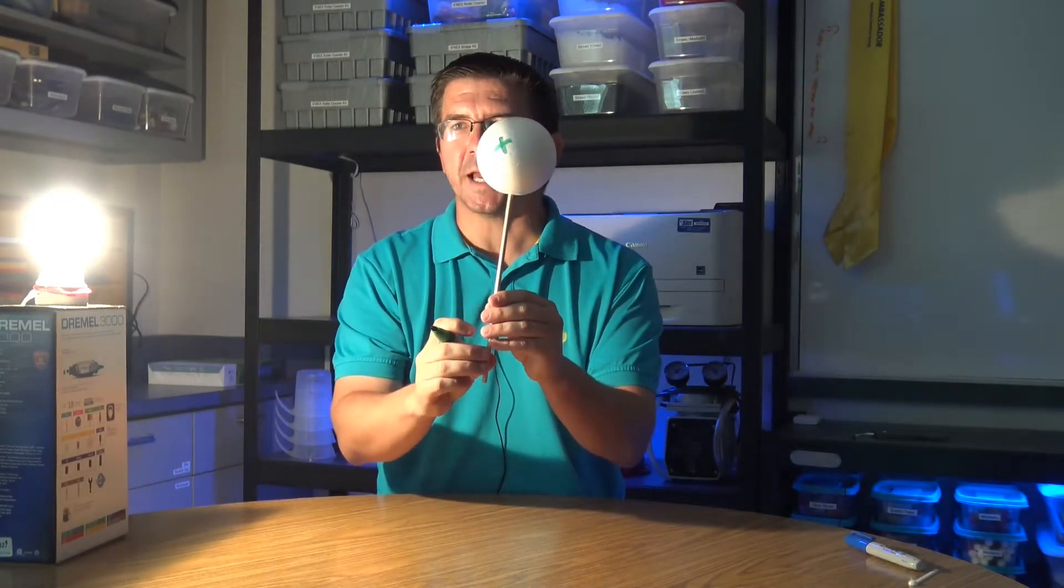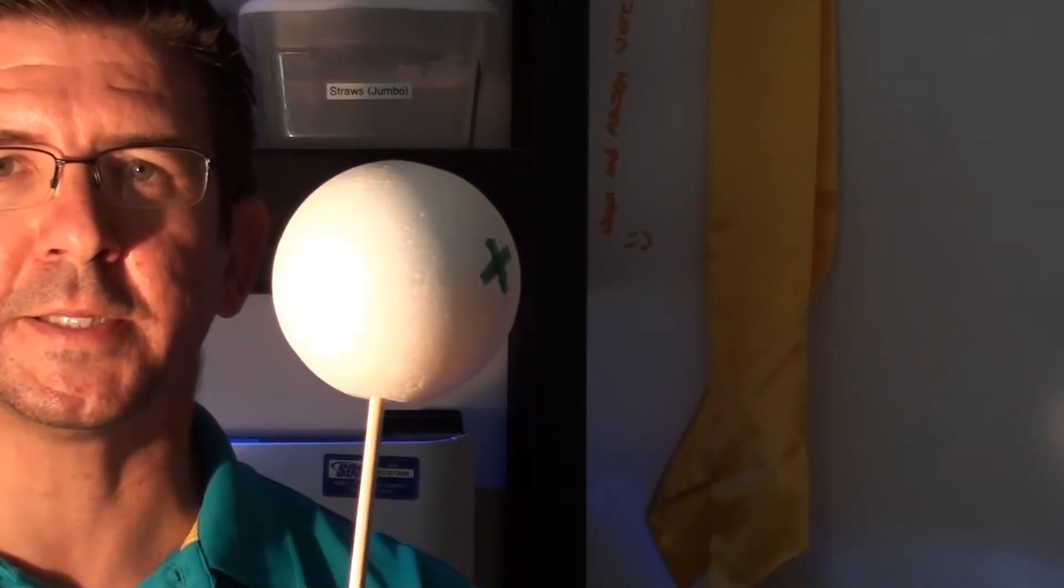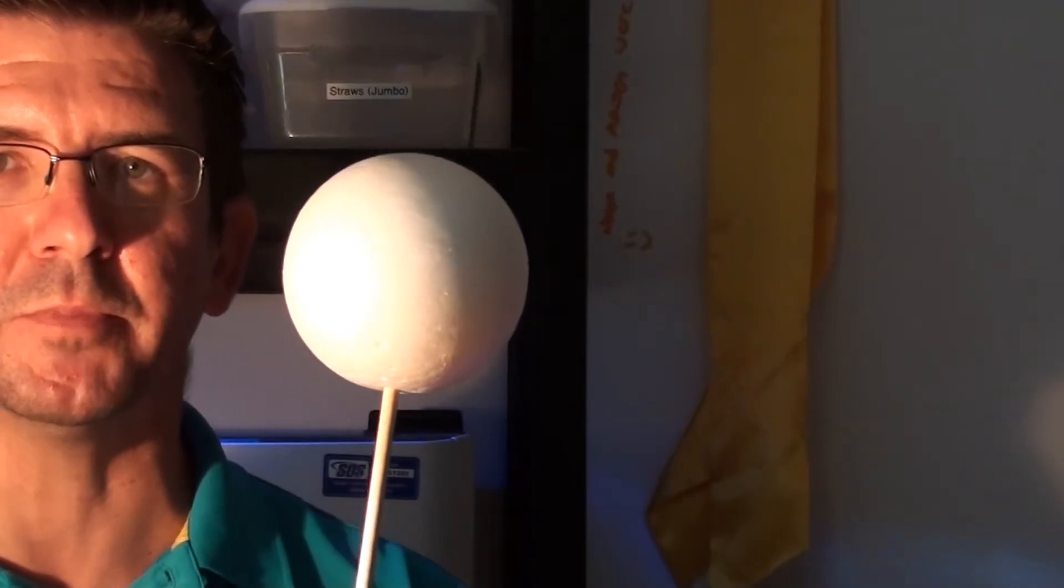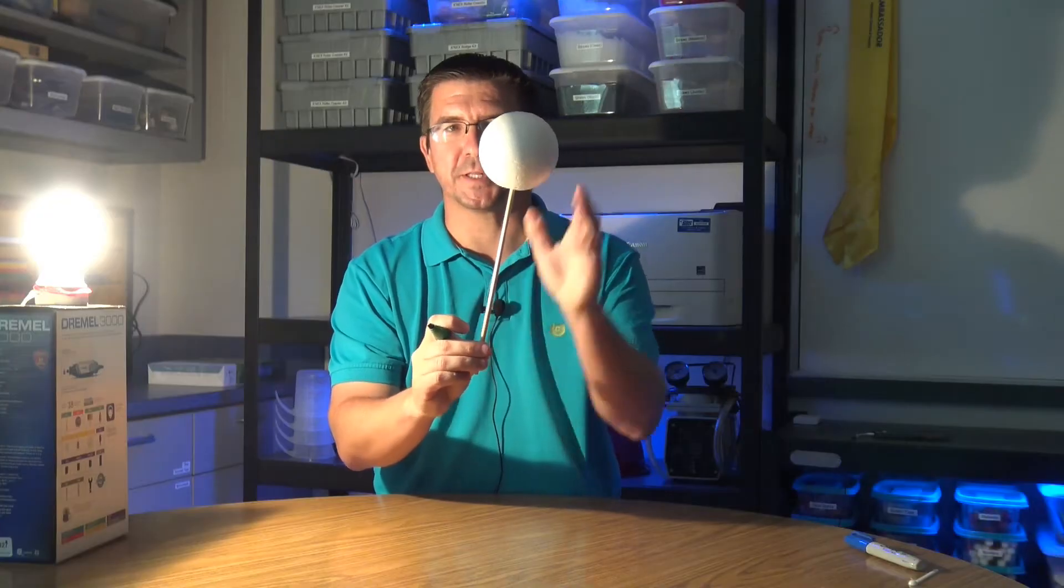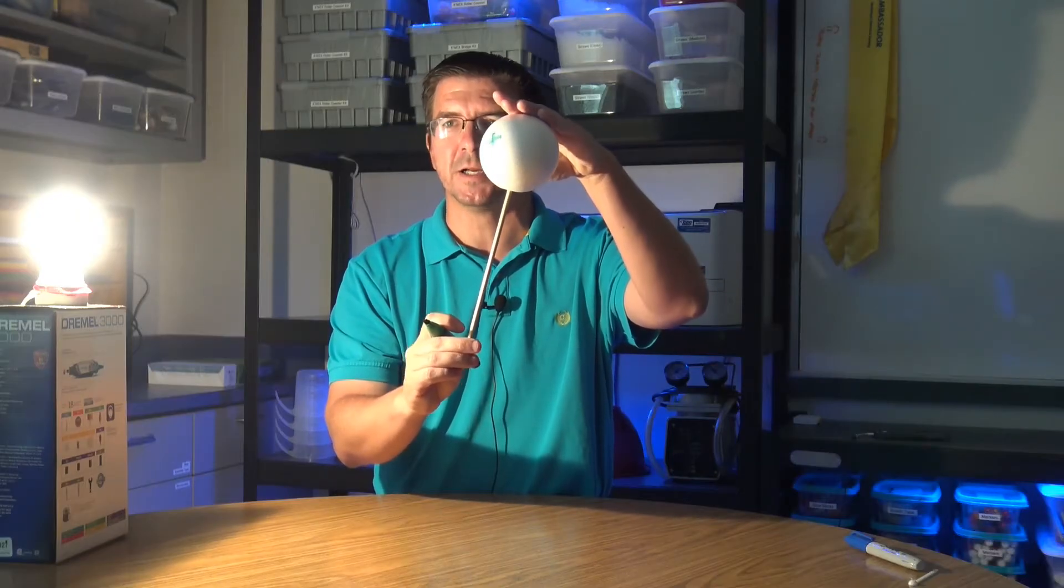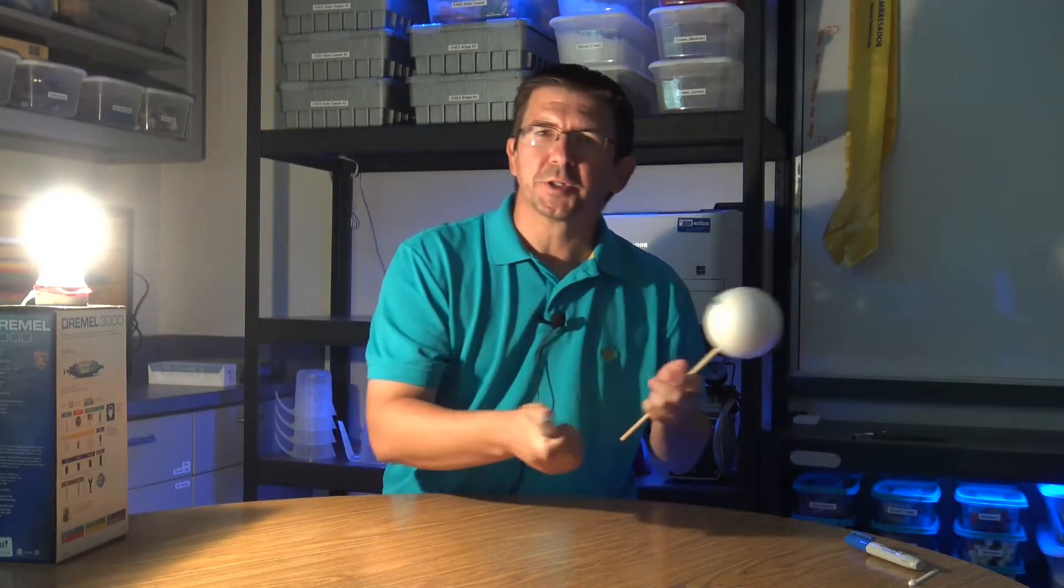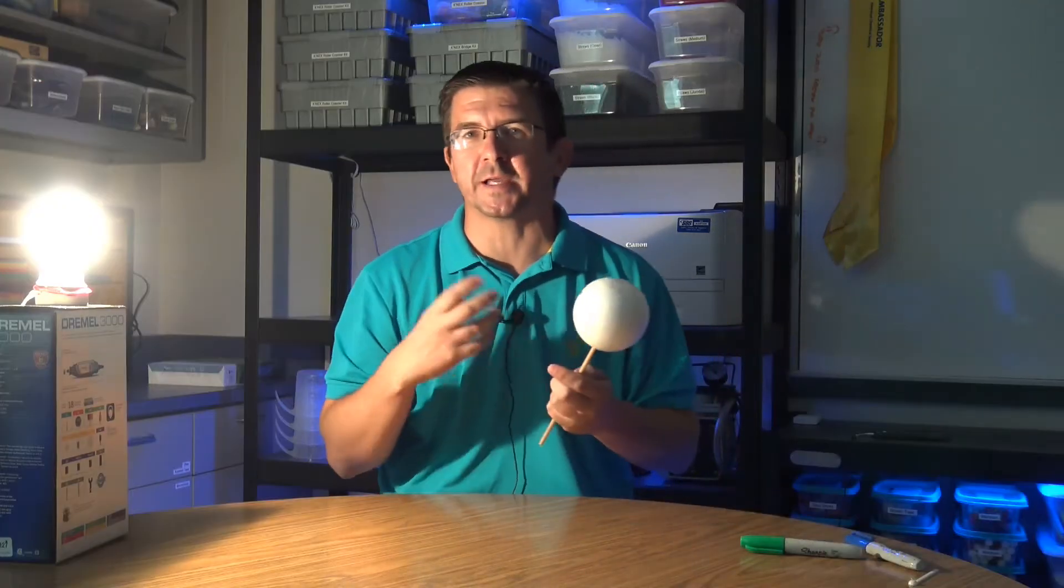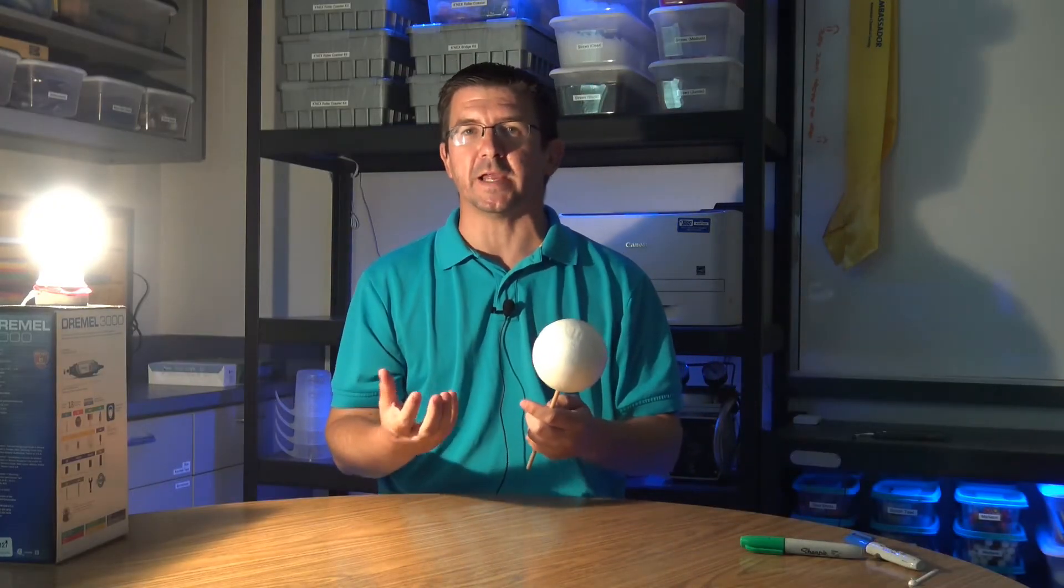So again, you can see as the ball rotates, that position changes and moves. The Earth is staying essentially in the same place. It's just spinning, it's rotating on its axis. So we're going to look at how that actually affects and how that causes this cycle of day and night.